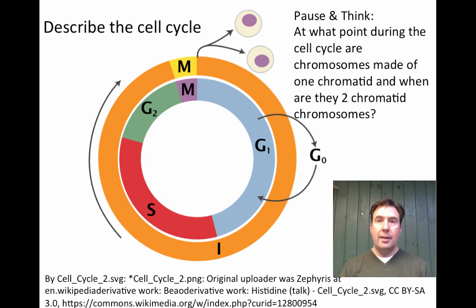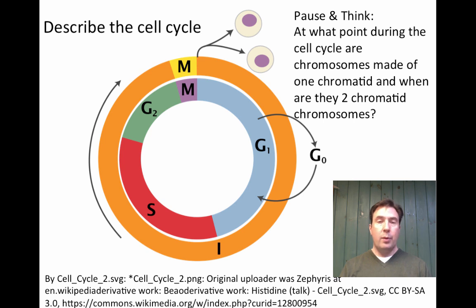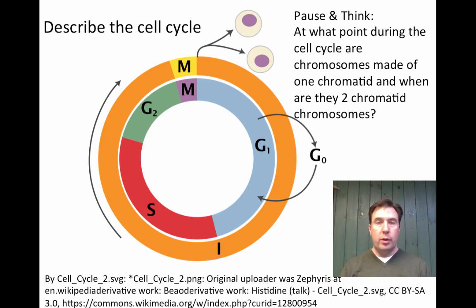Think about this: at what point during the cell cycle are chromosomes made up of one chromatid, and when are they two-chromatid chromosomes? During G1, there is only one copy of DNA, so chromosomes are single-chromatid. During S phase DNA doubles, so by the end of S phase chromosomes become two-chromatid. G2 has two-chromatid chromosomes. During M phase, the two chromatids pull apart, converting cells from two-chromatid back to one-chromatid chromosomes. During G1, S, and G2, chromosomes would not appear as X-shapes — that only occurs during M phase.